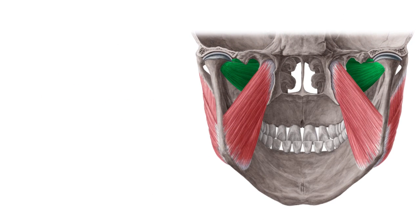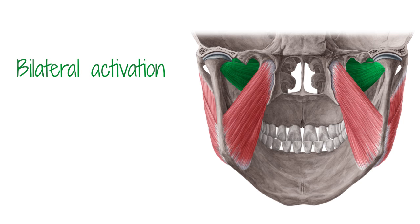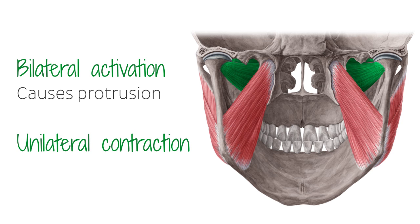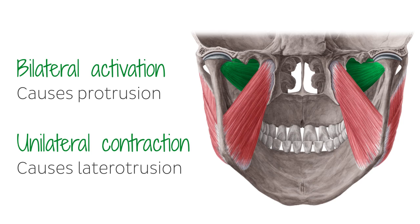Once the lateral pterygoid opens the jaw, the movement is then continued with the help of the suprahyoid muscles. The bilateral activation of the lateral pterygoid also causes protrusion, whereas the unilateral contraction moves the mandible laterally, which causes laterotrusion and this way supports chewing.